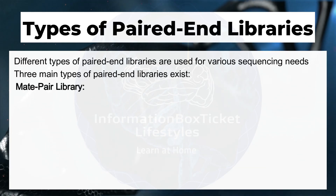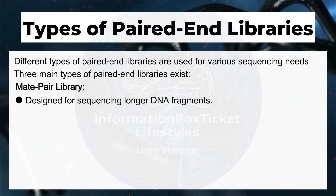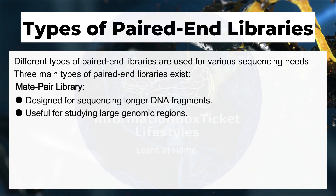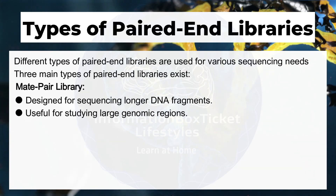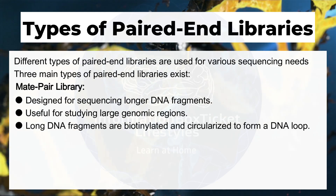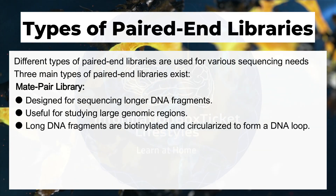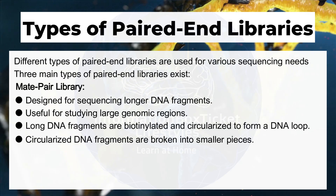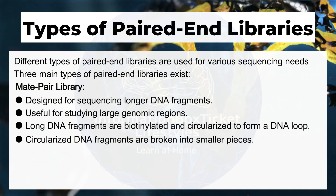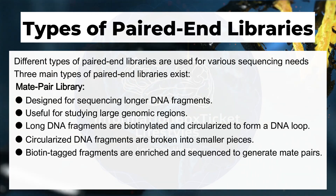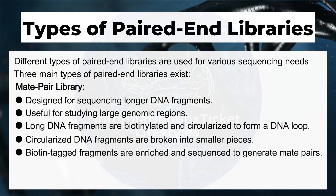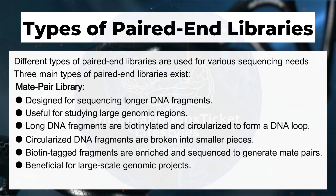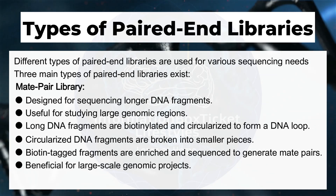The mate pair library is designed for sequencing longer DNA fragments and is useful for studying large genomic regions. Long DNA fragments are biotinylated and circularized to form a DNA loop. Circularized DNA fragments are then broken into smaller pieces, and biotin-tagged fragments are enriched and sequenced to generate mate pairs. This type is beneficial for large-scale genomic projects.